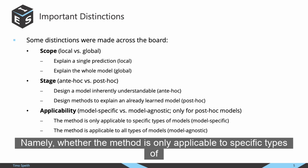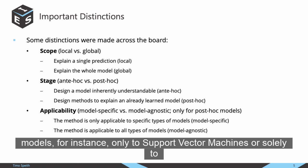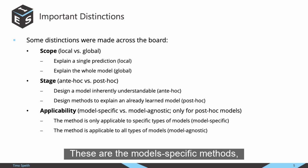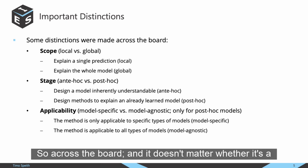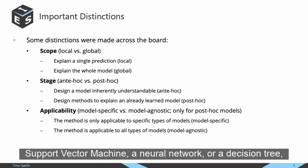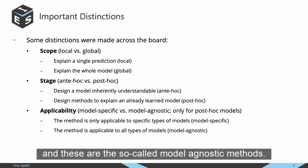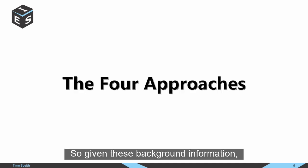For post-hoc methods, there is another distinction concerning applicability: whether the method is only applicable to specific types of models — for instance, only to support vector machines or solely to deep neural networks — these are model-specific methods. Or whether the method is applicable to all types of models regardless of whether it's a support vector machine, a neural network, or a decision tree — these are the so-called model-agnostic methods. Given this background, let's now come to the four approaches.